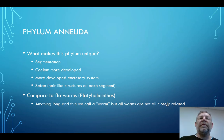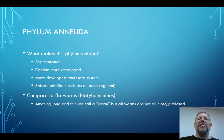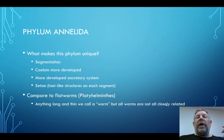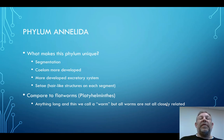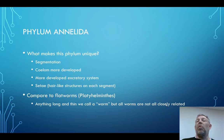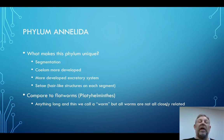We can also compare these to the flatworms, the phylum Platyhelminthes that we did a while ago. Anything that's long and thin, we call it a worm, but not all worms are closely related. The annelids are not closely related to the Platyhelminthes. We're going to talk about the roundworms next, and they're also not closely related. Just because something is a worm doesn't mean it's going to be in the same phylum — you've got to be able to tell the difference between the different kinds of worms.